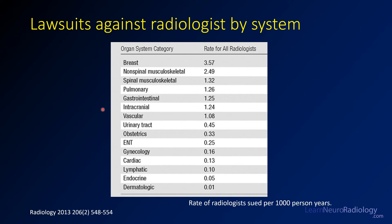Here you see lawsuits against radiologists listed by system. Again, you'll note that breast is first. There are some neuroradiology topics on here — particularly spinal/musculoskeletal and intracranial — and they are near the top. The neuroradiology topics are probably high because the negative outcomes of missing some findings can be pretty severe.